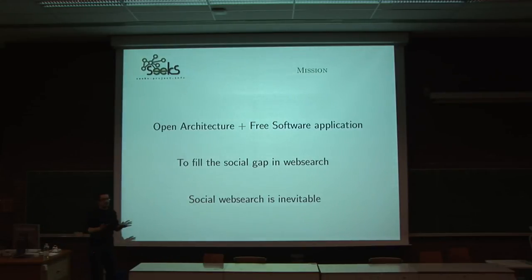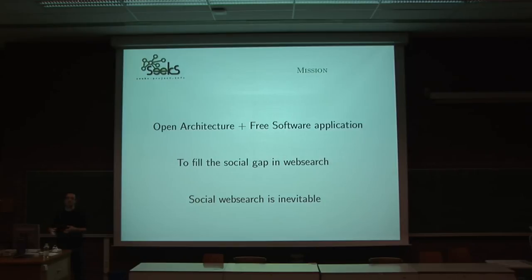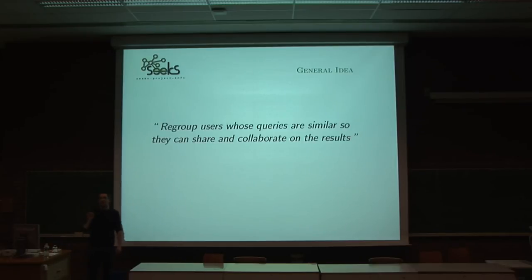So what is Six? Six is an open architecture and a free software application that tries to fill the gap in web search by making it collaborative and social. The main idea is that social web search is inevitable — it will happen. Whether Six succeeds or whether some other people come up with better ideas, it doesn't matter. In the end, we'll do search together, the way we do some other things together. The idea behind Six is very simple and very natural: it is to regroup users who perform similar or identical queries so they can share and collaborate on the results.